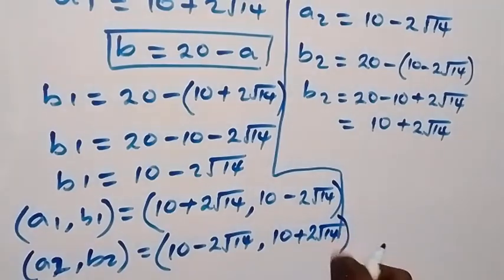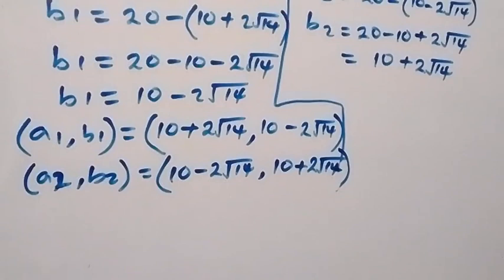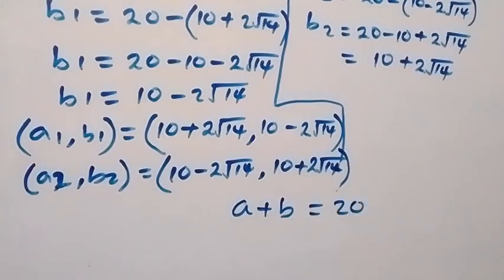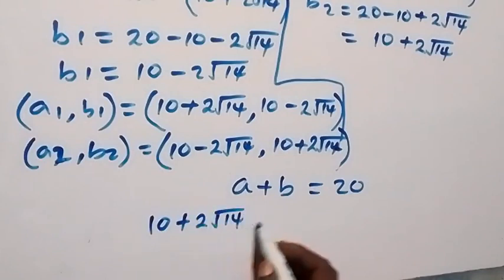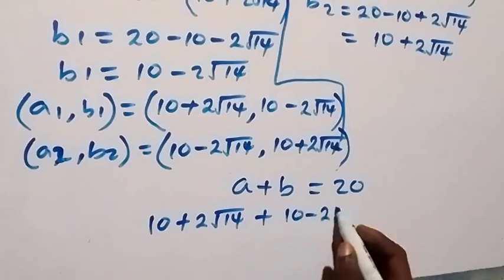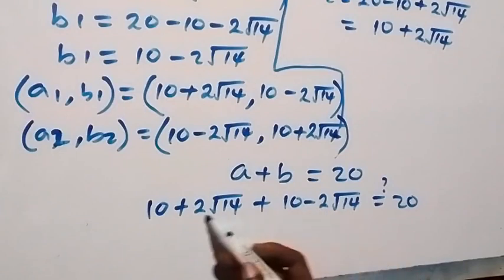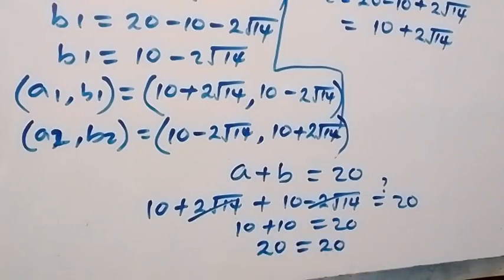From here we have these two sets of solutions. We can check against the given problem. From the first equation we have A plus B equals to 20. Using the first solution, A is 10 plus 2 root of 14, plus B which is 10 minus 2 root of 14. The plus 2 root 14 and minus 2 root 14 cancel out, then we have 10 plus 10 equals to 20, which satisfies the first equation.